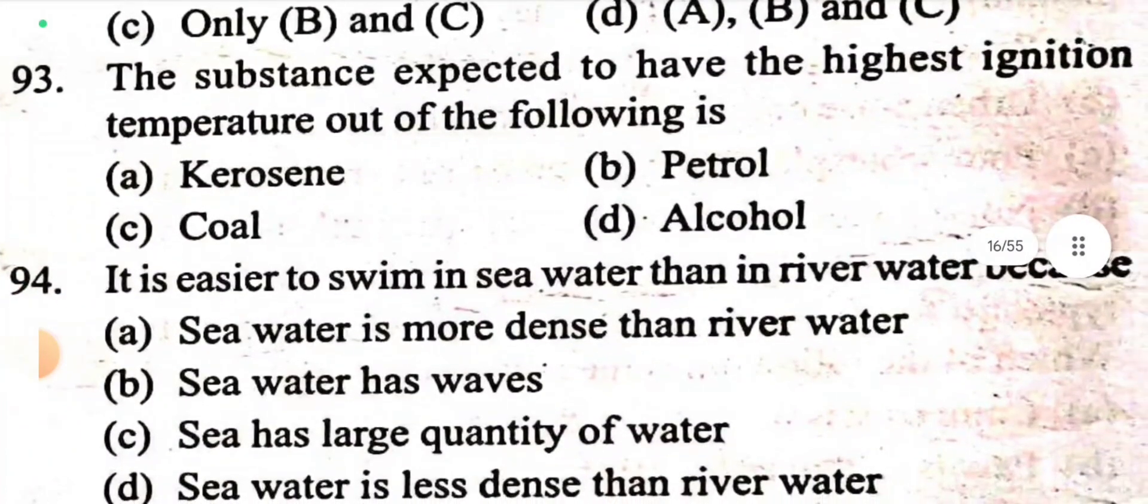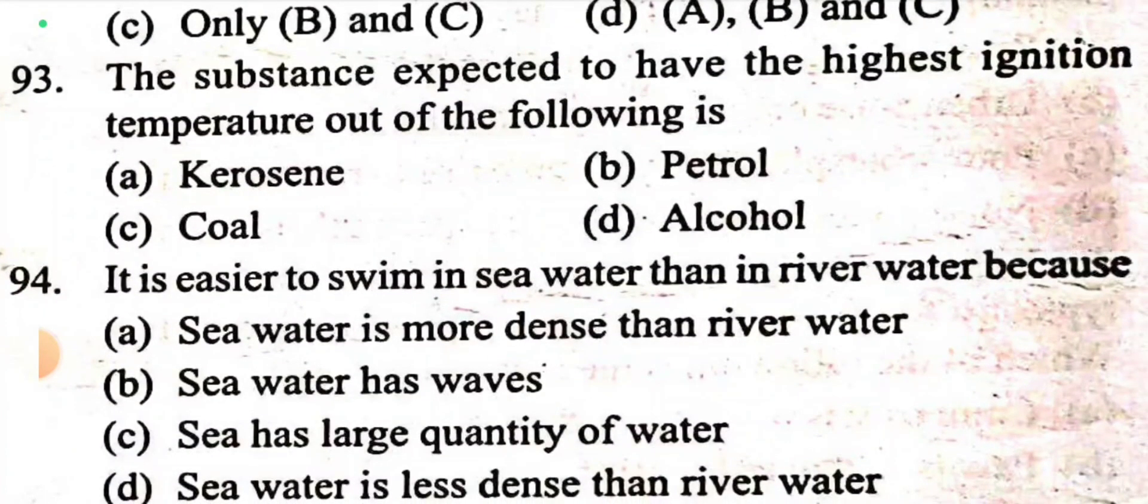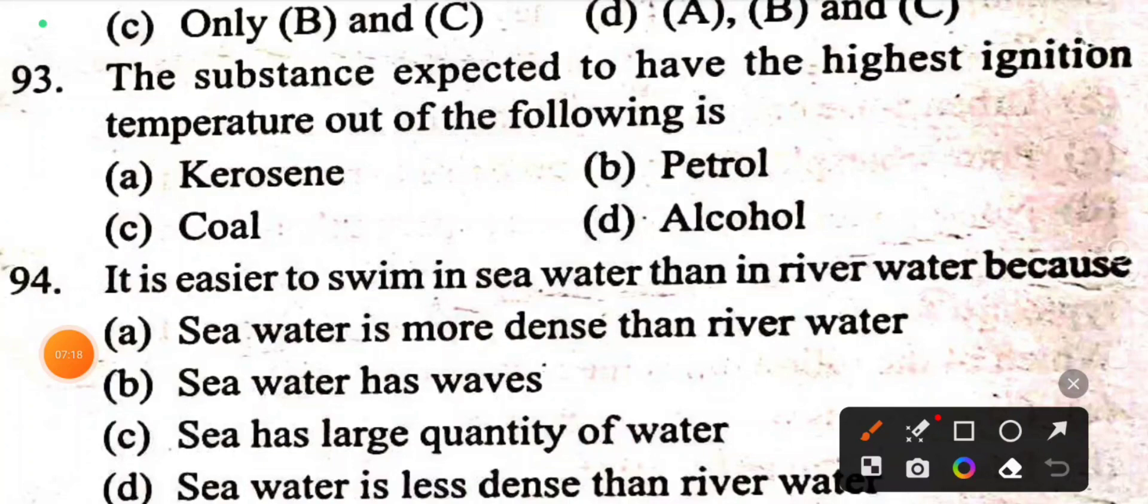Question 93: The substance expected to have the highest ignition temperature out of the following. With highest ignition temperature, the substance takes more time to catch fire. So coal has the highest ignition temperature among this list.